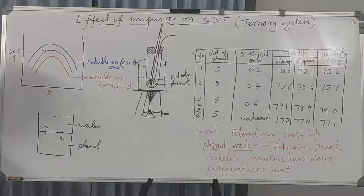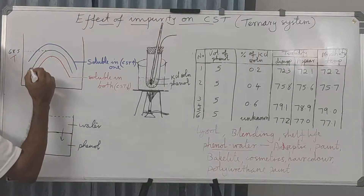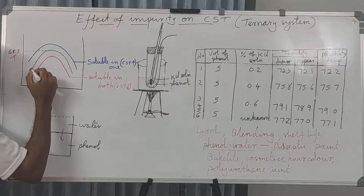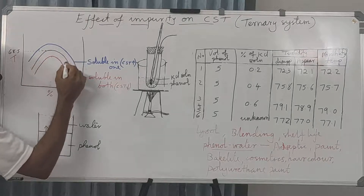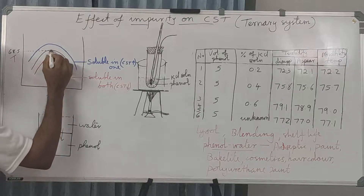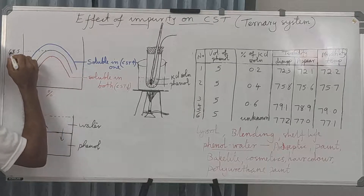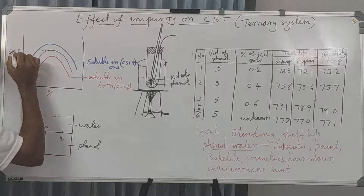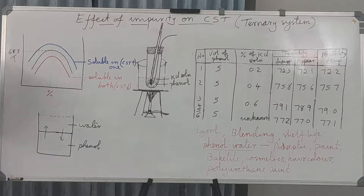For the conjugate solution of the phenol-water system, we get miscibility temperature curves, and the CST value for that particular combination is 68.5°C.